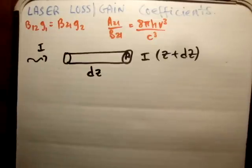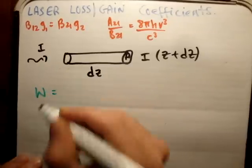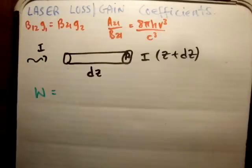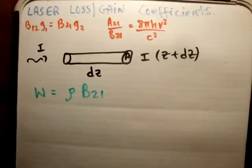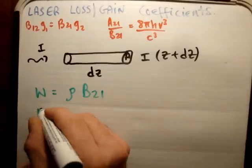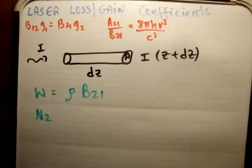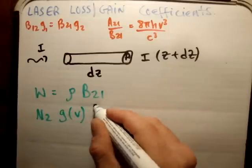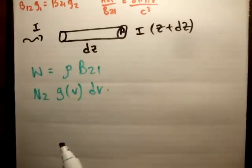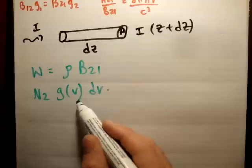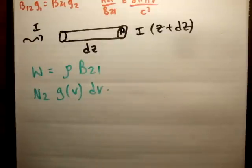What is the probability of stimulated emission? We've said in the past that the probability of stimulated emission is w. In order to get that, you need the energy density and the probability of emission from energy level 2 to energy level 1, which is the Einstein coefficient b21. Then you need to ask yourself, how many atoms are available to be stimulated? That's going to be equal to the number density in energy level 2 times the line shape function times d nu. That gives you the number of atoms available to be stimulated.